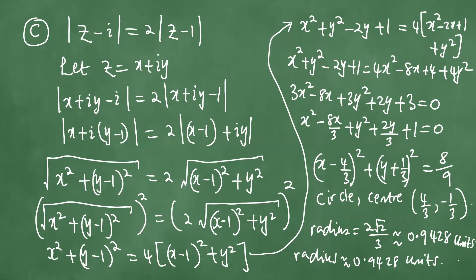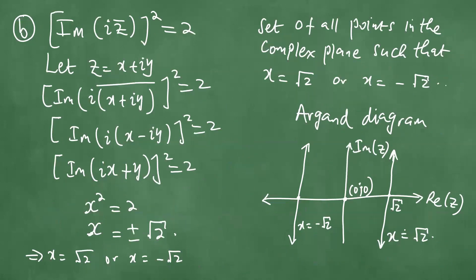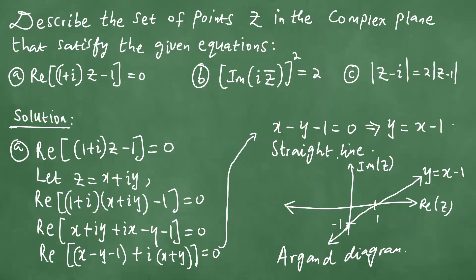We have just described these particular sets of points. The circle can be sketched easily given the center and radius, and we also have the Argand diagram for the straight line from part (a). Thanks everybody, goodbye.